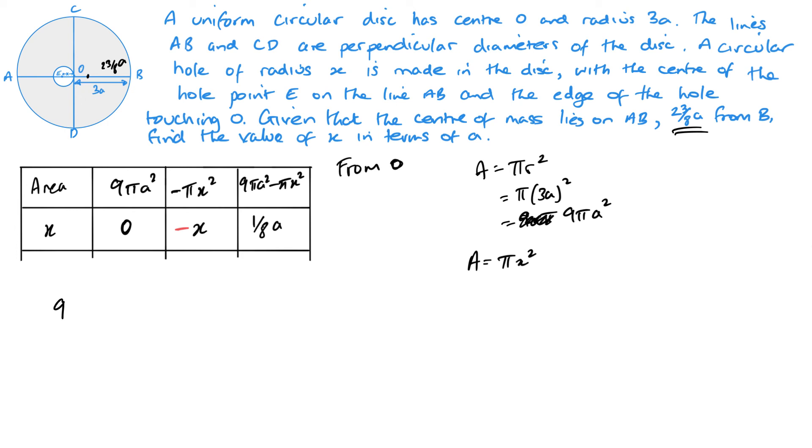Now, we've got 9 pi A squared multiplied by 0 minus pi X squared multiplied by negative X. And 9 pi A squared minus pi X squared multiplied by A over 8. That 1 eighth A there. So a couple of things I can do to simplify this and get rid of that. Multiply by 0. I can see clearly there's a pi here and there's pi's in both terms over here. So I can simplify this by getting rid of my pi's.